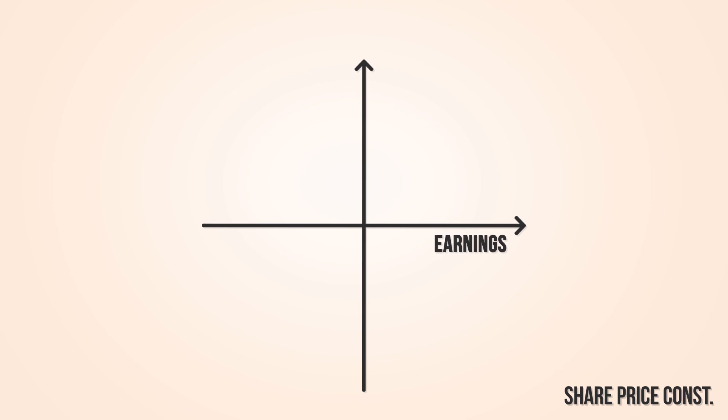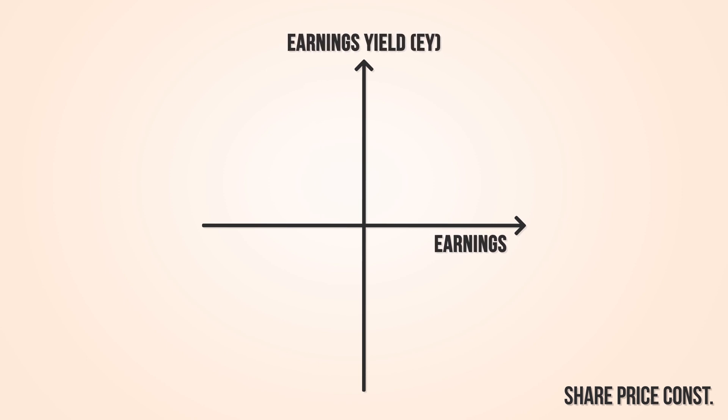Let's look at the relationship between earnings yield and earnings. We plot earnings on the x-axis and earnings yield on the y-axis, and compare it to the PE ratio. Earnings yield has a linear relationship with earnings. So when a company's earnings don't change much, earnings yield reflects that steadiness. This property makes stock comparison fair, and we can include all companies in our analysis, regardless of whether their earnings are positive, negative, or zero. For earnings yield, it also always holds that all other things equal, high means good and low means bad. And that is simple and easy.